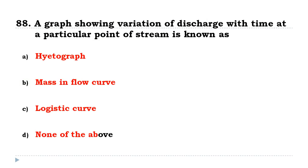A graph showing variation of discharge with time at a particular point of stream is known as a hydrograph.